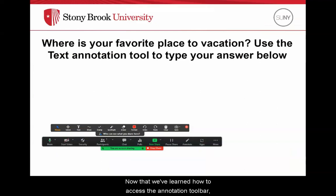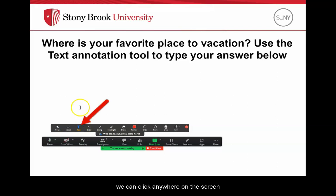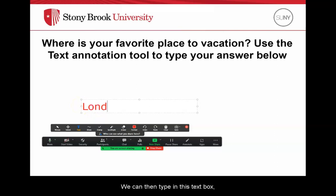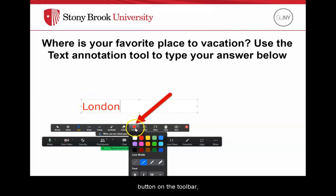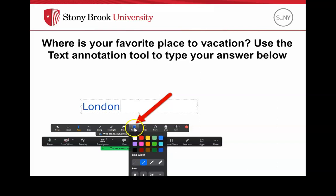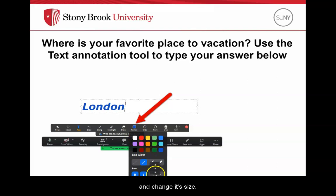Now that we have learned how to access the Annotation toolbar, let's take a look at some of its features starting with adding text. If we click the T icon that says Text, we can click anywhere on the screen and a text box will appear. We can then type in this text box and what we type will be viewable to all participants. Additionally, if we click the Format button on the toolbar, we can change the color of the text, make our text bold or italicized, and change its size.